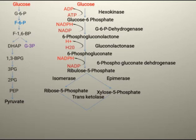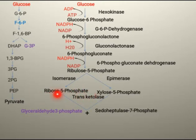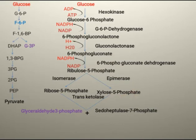The transketolase enzyme acts on ribose 5-phosphate and xylose 5-phosphate, producing two compounds: glyceraldehyde 3-phosphate and sedoheptulose 7-phosphate. When ribose 5-phosphate loses 2 carbons, it becomes the 3-carbon containing sugar glyceraldehyde 3-phosphate. When xylose 5-phosphate gains 2 carbons, it becomes the 7-carbon containing sugar sedoheptulose 7-phosphate.